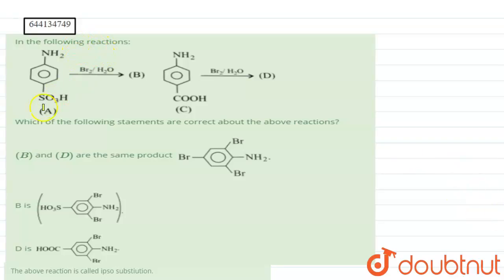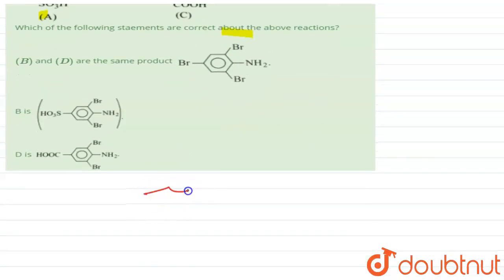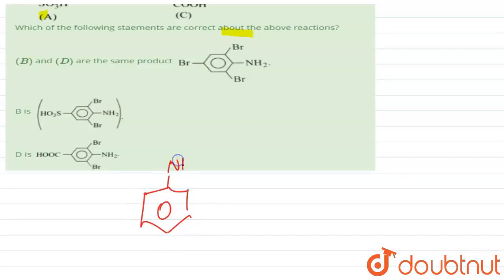We have been asked about two reactions, and we have to choose which of the following statements are correct. In our first reaction, para-amino sulfonic acid - this is the amine group and this is the sulfonic group - is reacted with bromine in the presence of a polar solvent, that is water.